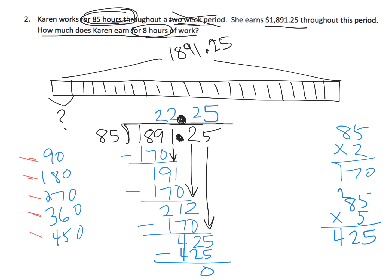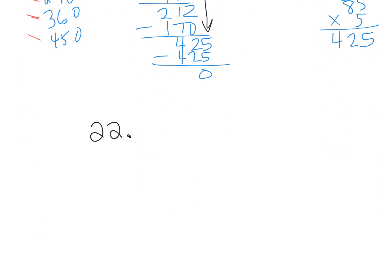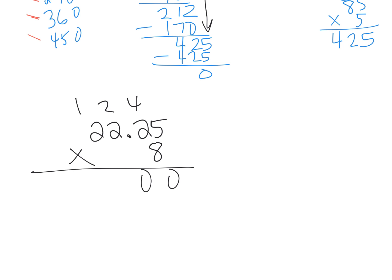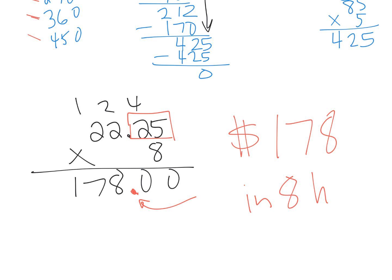That means each hour is $22.25. But the real question is we want to know how much she would make in 8 hours. So we're going to take that 22.25 and multiply by 8. And since we have two decimal places in the problem, that means we need two decimal places in the answer. So the answer is she will make $178 in 8 hours.